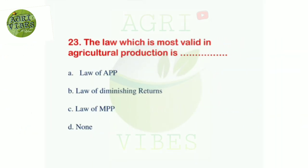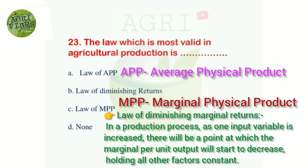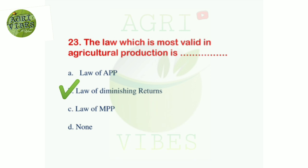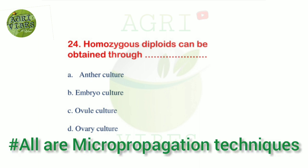Next question: the law which is most valid in agriculture production is — options: law of APP, law of diminishing returns, law of MPP, and none of the above. Correct answer is law of diminishing returns, option B. Next question: homozygous diploids can be obtained through — options: anther culture, embryo culture, ovule culture, and ovary culture. Correct answer is anther culture, option A.